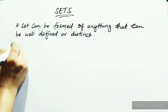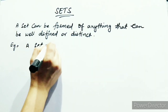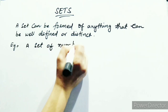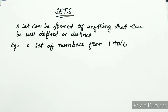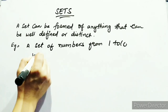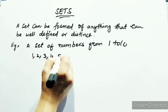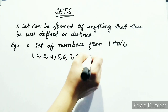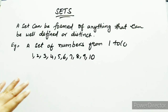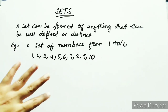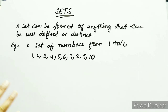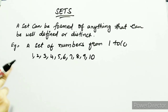Take an example: a set of numbers from 1 to 10. What will you get? 1, 2, 3, 4, 5, 6, 7, 8, 9, and 10 — you are forming a set. It is a well defined set and it is distinct. 1, 2, 3 means each element is unique — no repetition. This is called a set.